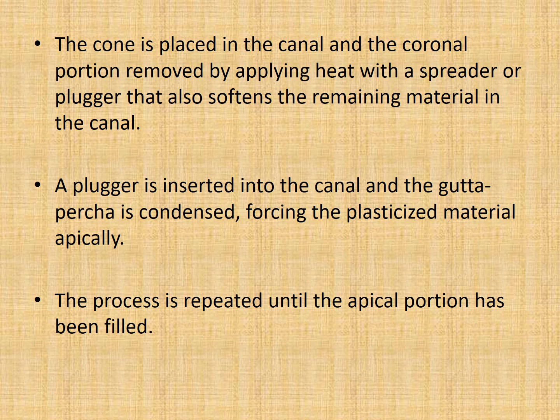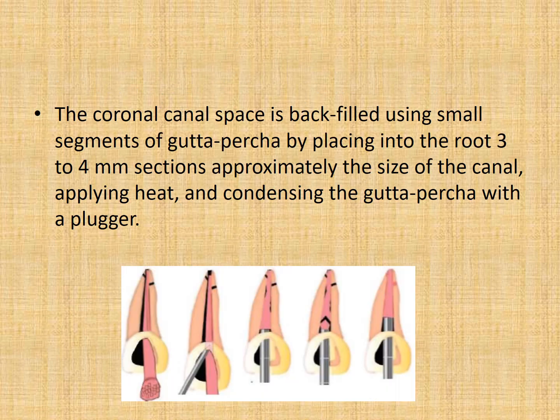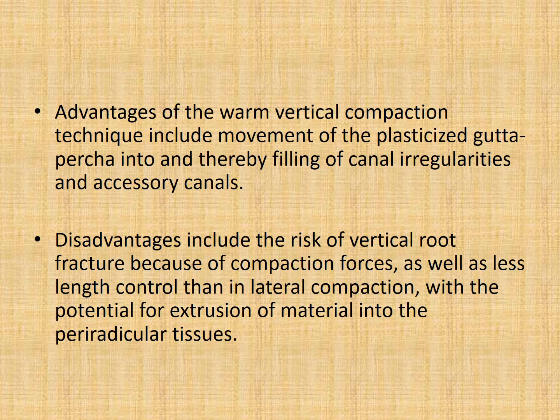The process is repeated until the apical portion has been completely filled. The coronal space is then backfilled using small 3-4 mm segments of gutta percha placed into the root, approximately the size of the canal, applying heat and then condensing with a plugger. The advantages include movement of plasticized gutta percha into and thereby filling canal irregularities and auxiliary canals. The disadvantages include risk of vertical root fracture due to excessive compaction forces, less length control compared to lateral compaction, and potential for extrusion of material into periradicular tissues.